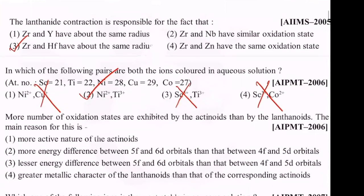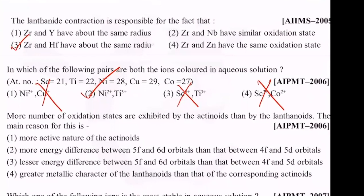More oxidation states are exhibited by the actinoids than by the lanthanides. The main reason is the lesser energy difference between 5F and 6D orbitals than between 4F and 5D orbitals. Lesser energy difference between 5F and 6D orbitals — that's why it's easier to transfer electrons.